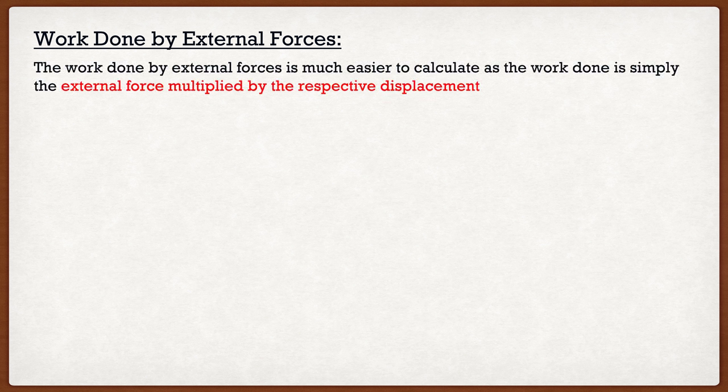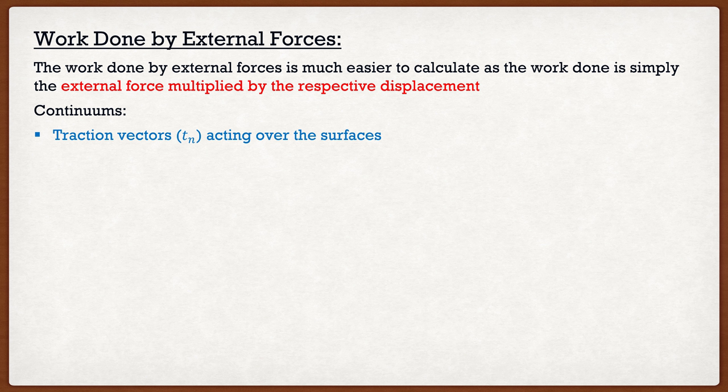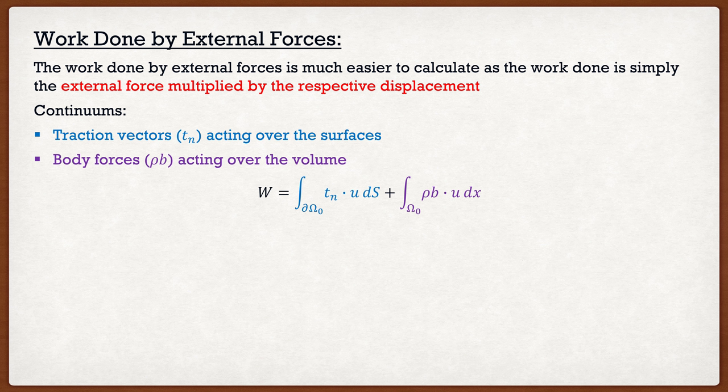That's the internal strain energy, but we said that calculating potential energy has two components. The second one is the work done by external forces. This sounds really complex, but it's actually really simple — the work done on a system is simply the external force on the system multiplied by its respective displacement. For continuums, we typically have two external forces: traction vectors, which act over surfaces, and body forces, such as gravity, which act over the volume. The work done is the dot product of the traction vector with the displacement vector integrated over the surfaces, plus the dot product of body forces with the displacement vector integrated over the volume.